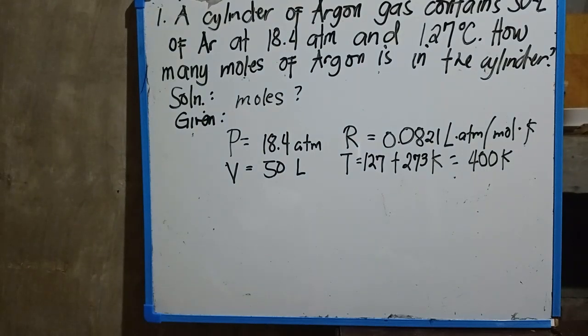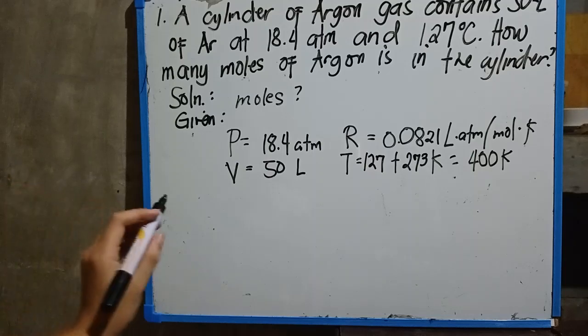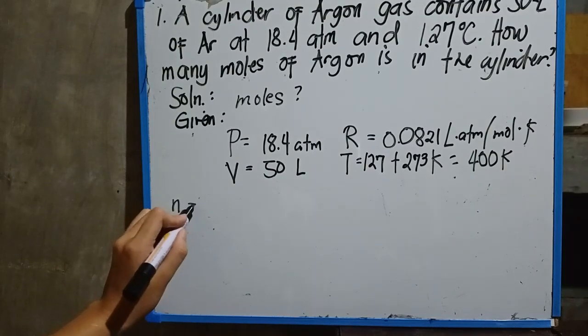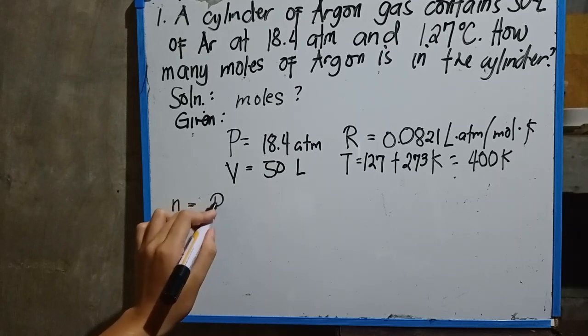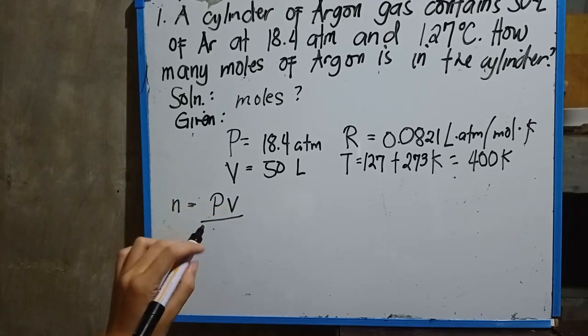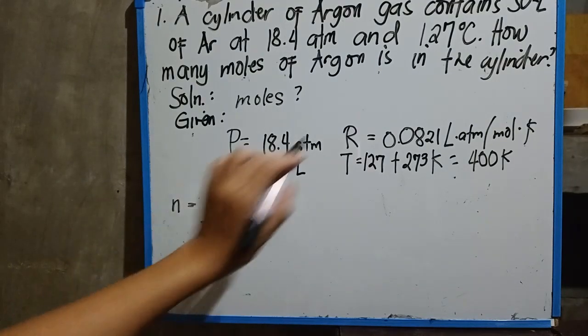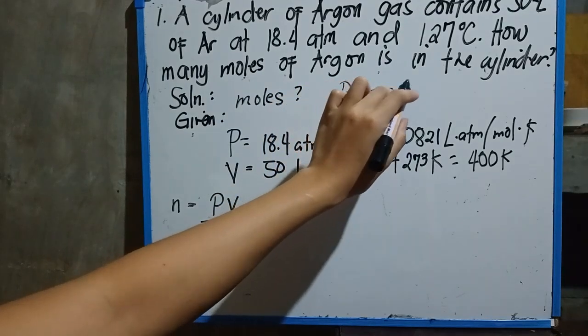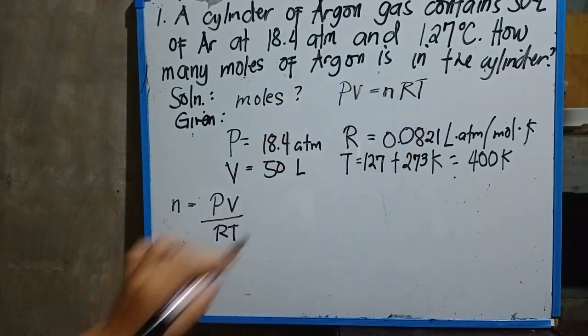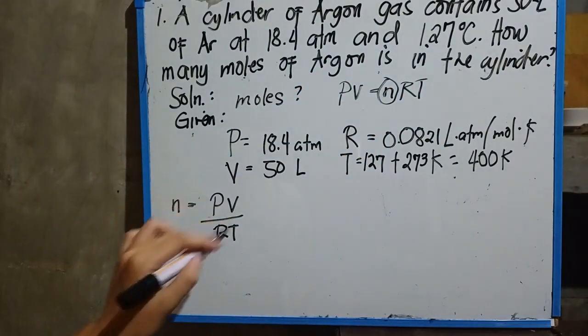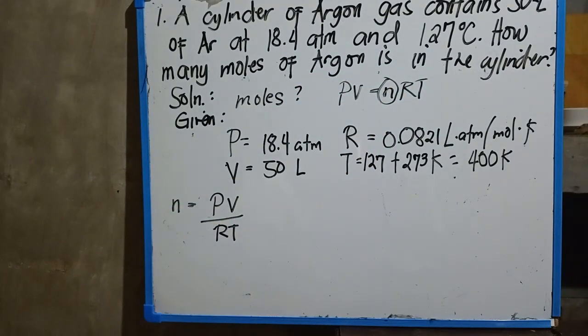Getting the number of moles of the argon inside the cylinder. Since we are going to solve for moles, so n = PV over RT. As you all know that the formula of ideal gas law is PV = nRT, but since moles is what we're looking for, this is the formula if we are going to solve for moles.